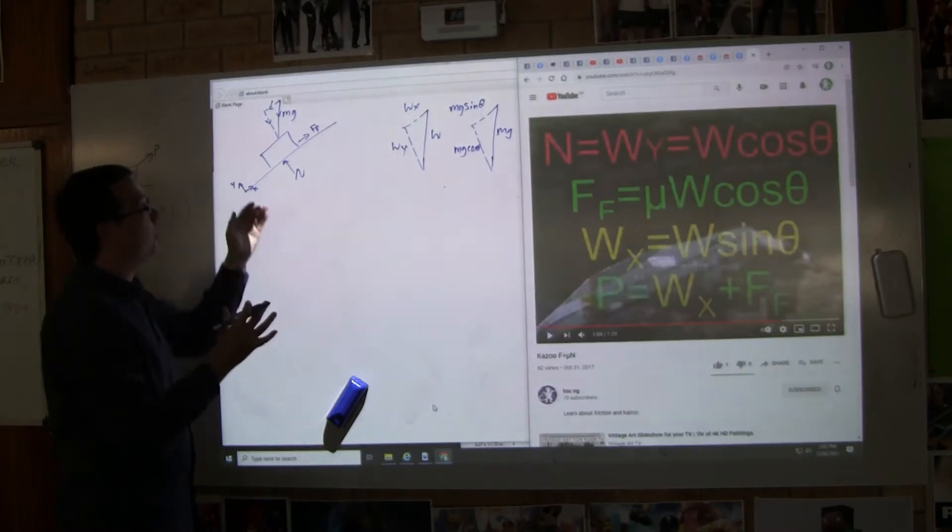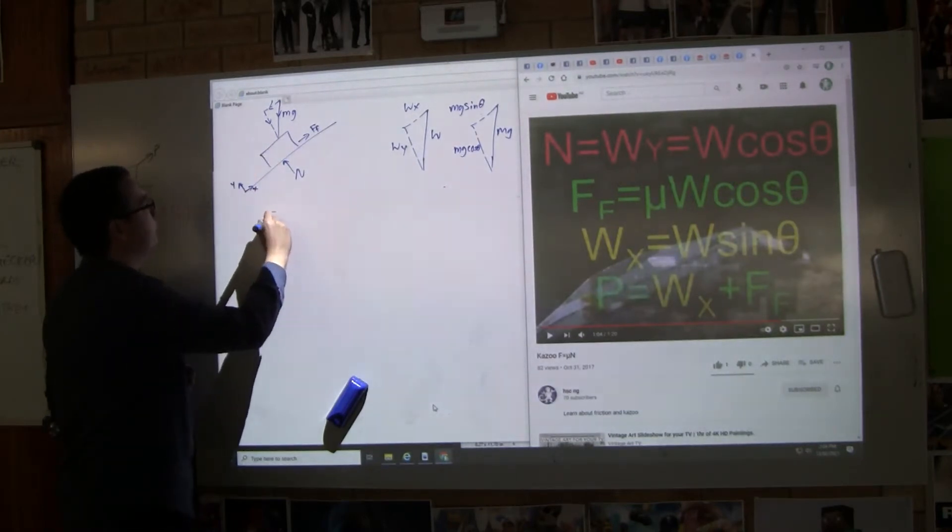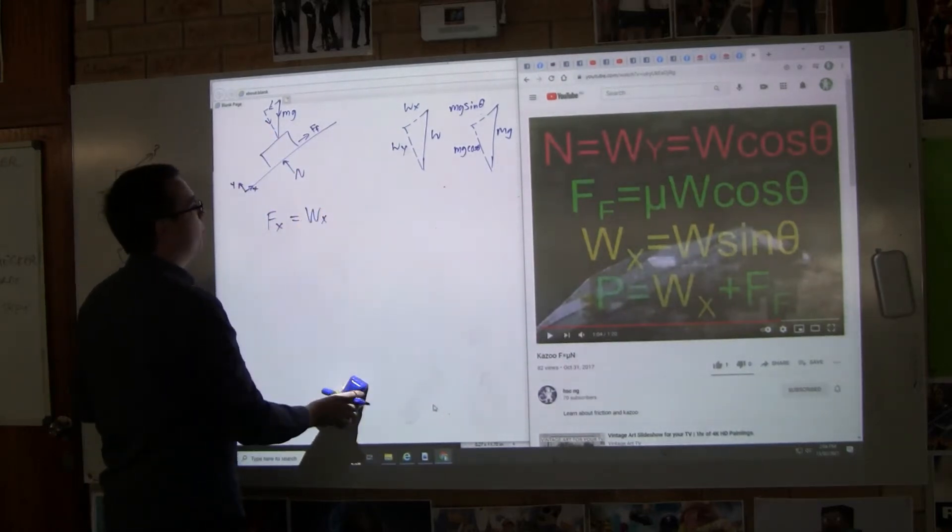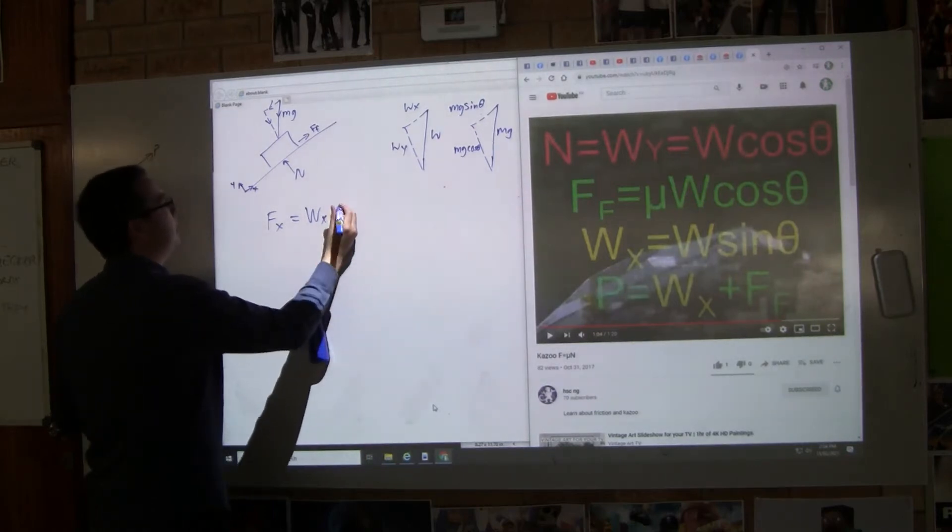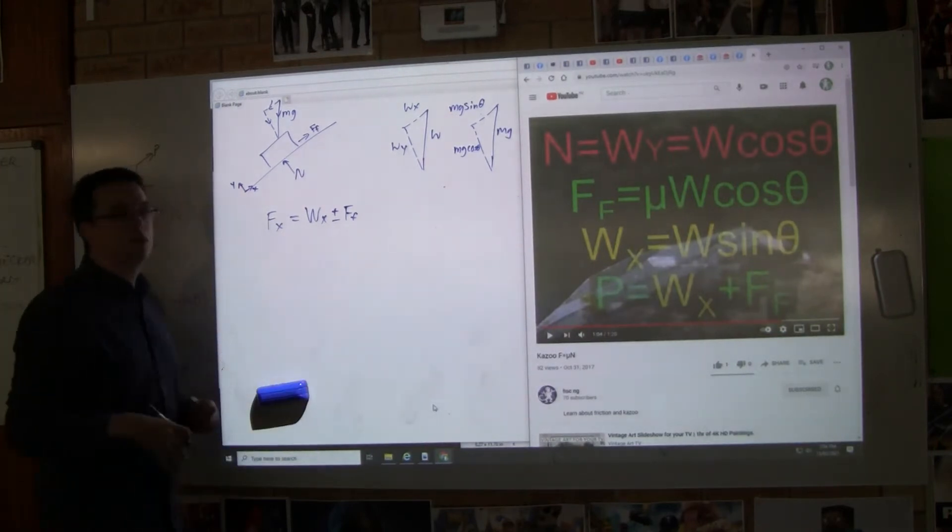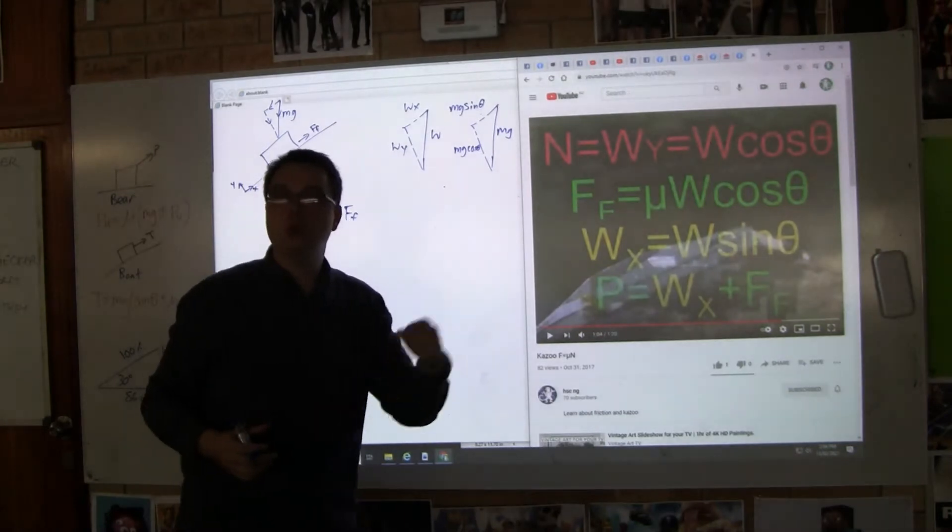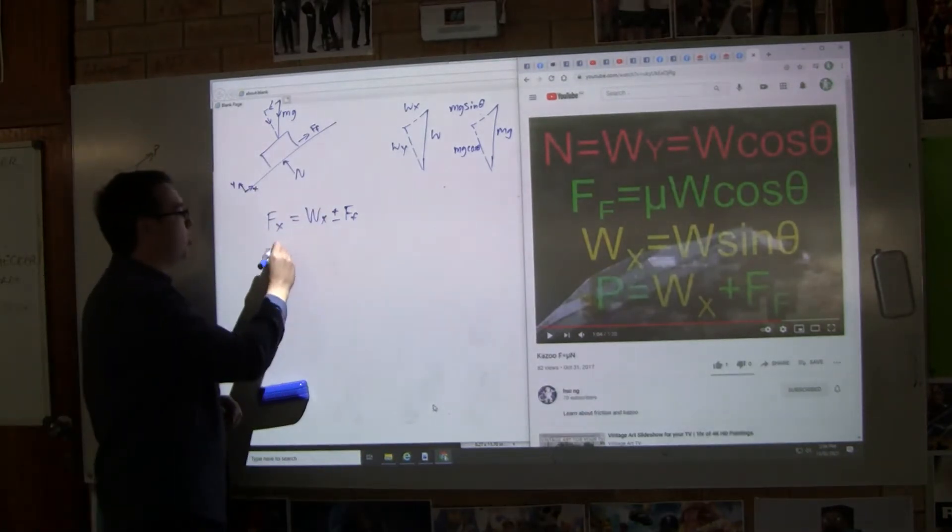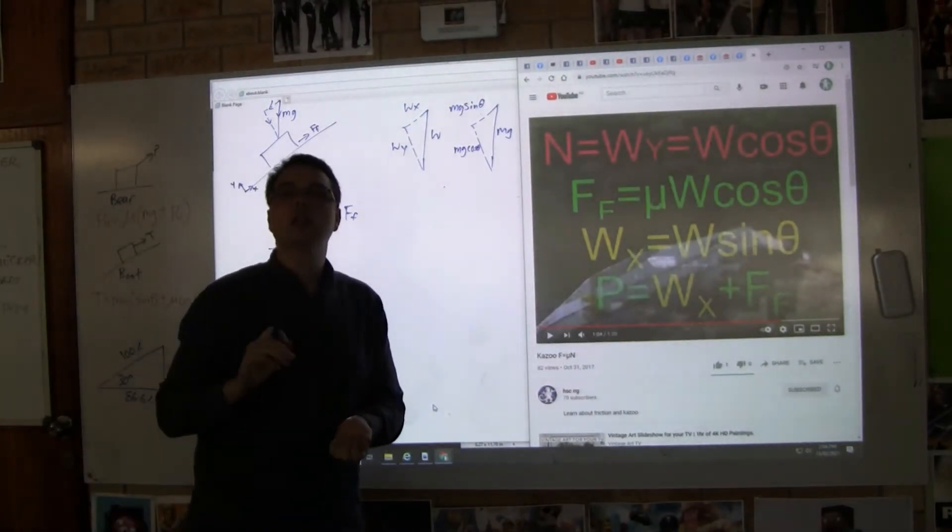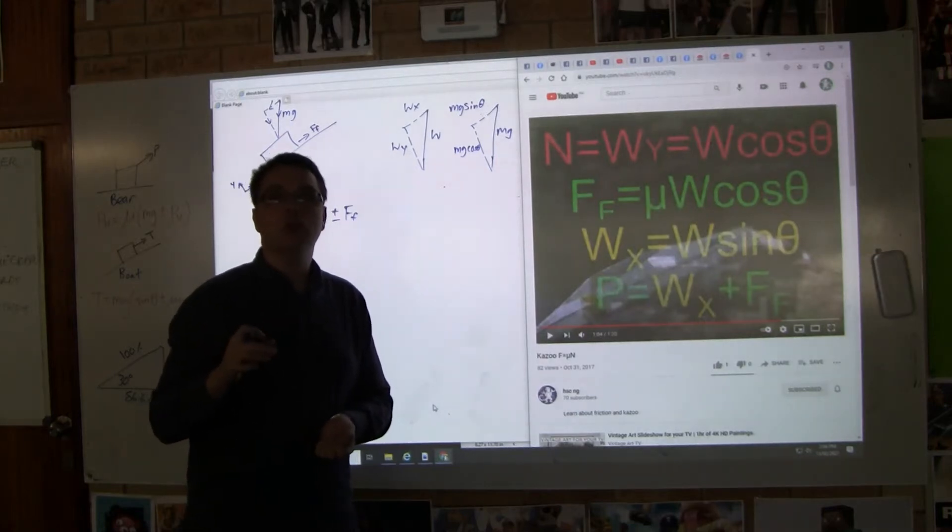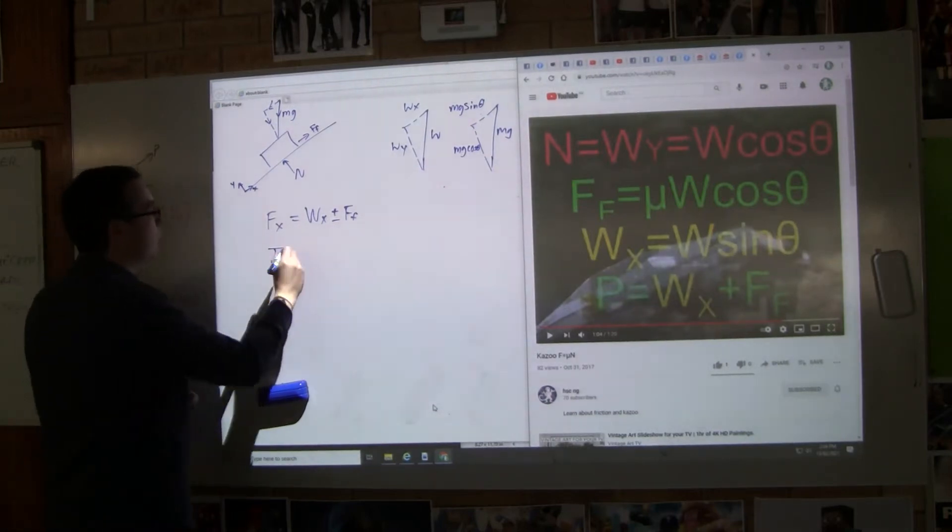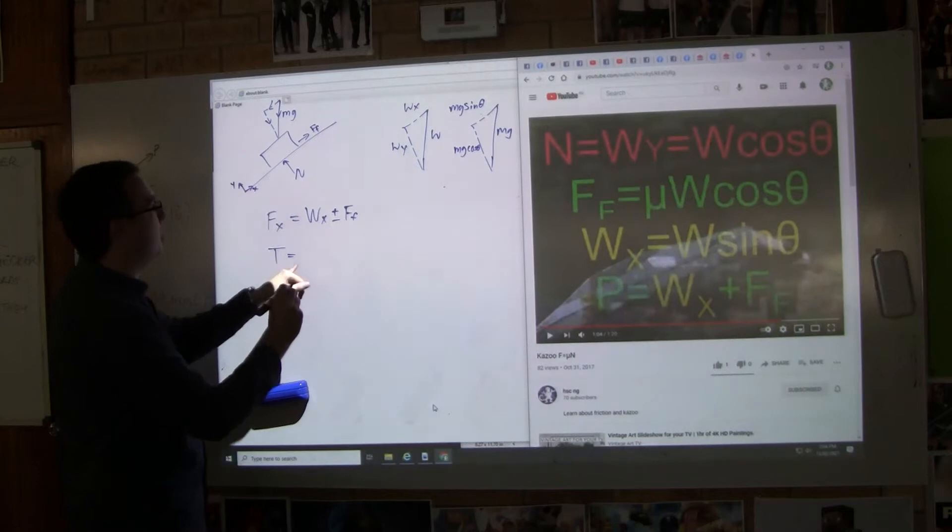The forces in the horizontal, the forces in our X direction, the total force in the X direction is going to equal WX and it's either going to have plus or minus friction. Now the thing is, often with boats, we're going to have tension on a rope that pulls it up. That tension on a rope, we're going to use the letter T.